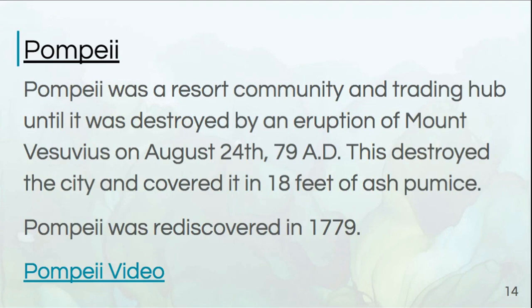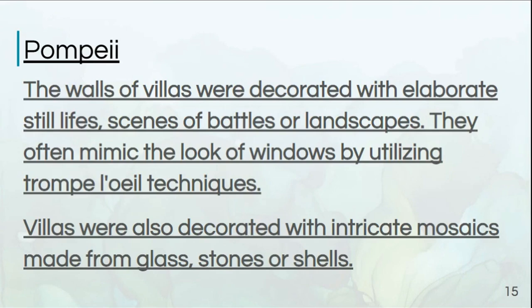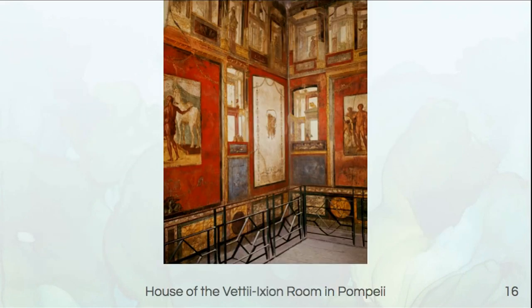I have a link to a video on Pompeii in the description box below. Pompeii villas were often decorated with beautiful, elaborate still lifes and scenes of battles or landscapes. They often mimicked the ideal of looking out a window and seeing a beautiful vista, going back to those trompe l'oeil techniques we talked about in the last class period when we discussed Greek paintings. Here we have the house of the Vetii — an Ion room in Pompeii — and you can see this idea of a faux window. These aren't actually windows; they are paintings on the wall that give the illusion of windows in a closed space.